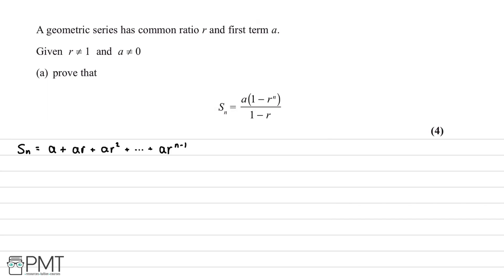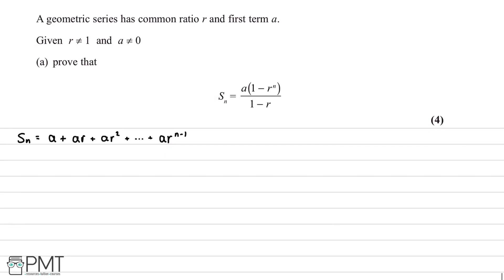We stop at n minus 1 for the final term because we're summing the first n terms. For example, the terms go 1, 2, 3, and so on, making ar to the n minus 1 our nth term. Now we're going to multiply both sides by r.